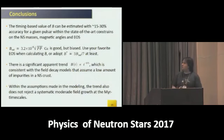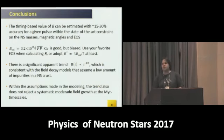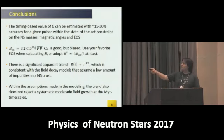This is my conclusion. It seems timing-based magnetic fields of radio pulsars can be constrained from their timing with uncertainty less than 15 or 30%. The magnetic dipole estimator is quite good but biased. If you want to calculate the unbiased magnetic field, you have to think about equation of state, choose your favorite one, or at least use a factor of about 3.7, which I think is a good choice.